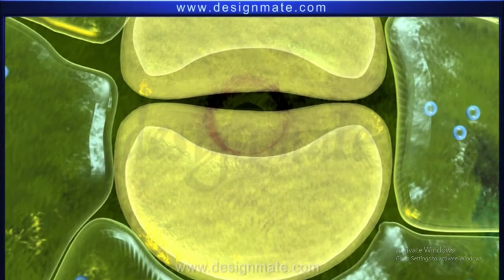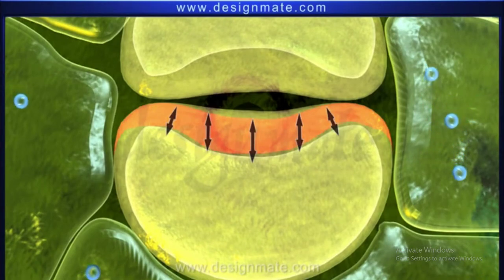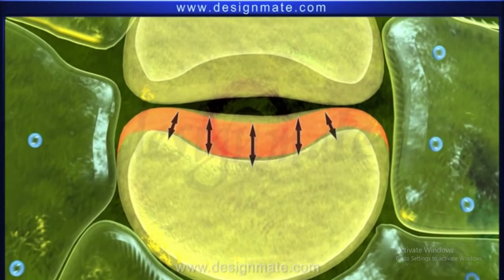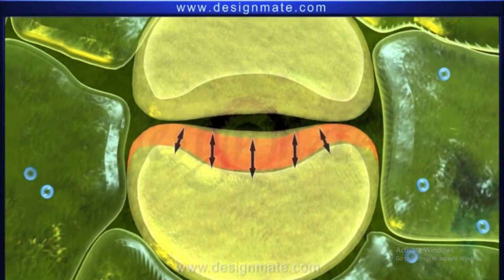The wall of the guard cells surrounding the aperture are thicker compared to the outer wall.